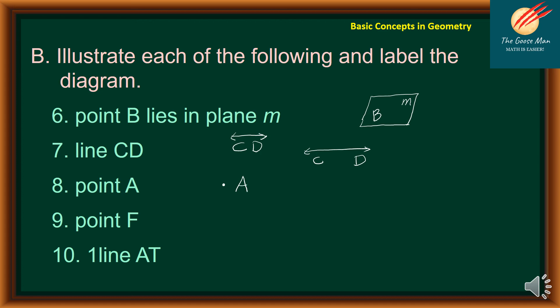Number nine, point F. And finally, for number 10, we have line AT. So again, let's draw a line. We have AT. So in symbol, we can rewrite this one as, we can write line with the symbol on top of AT.